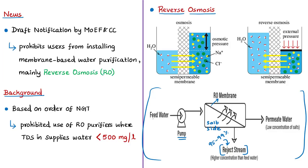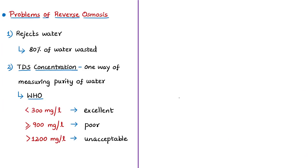The amount of pressure required depends on the salt concentration of the feed water — the higher the concentration, the more pressure is needed. The desalinated water is called permeate or product water. The main problem with RO is that it rejects a large volume of water along with solutes. According to RO manufacturers, only 20 percent of feed water is recovered, while 80 percent goes as waste — this was a key reason for the NGT's order.